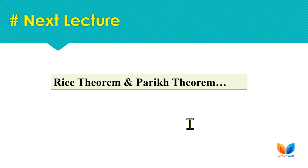Since the machine goes into an infinite loop and we cannot predict its output, we declare this PCP undecidable or recursively unsolvable. In the next lecture we will talk about Rice's theorem, Parikh's theorem, and some other examples of the Turing machine. Till then, bye and take care.